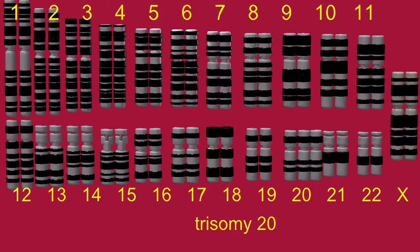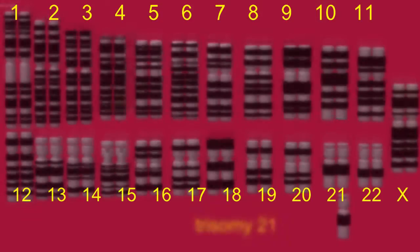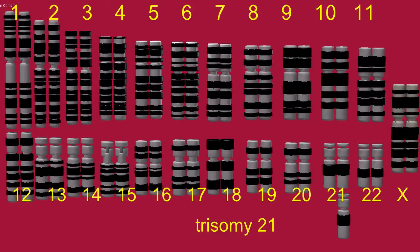Trisomy 4 would indicate a third copy of chromosome 4, and the most common autosomal trisomy is that of chromosome 21, also known as Down syndrome.